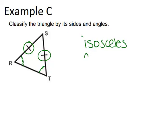I would also say that this is an acute triangle, because all three angles in this picture are less than 90 degrees. So this would be an acute isosceles triangle, or an isosceles acute triangle. The order of those words doesn't really matter.